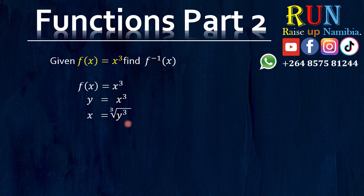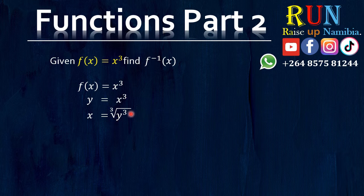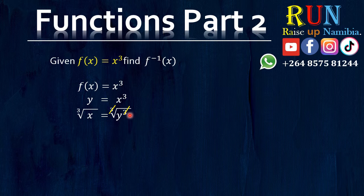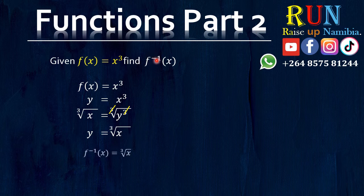So making y the subject of the formula, we will have to cancel out this small 3 on top. How can we cancel that small 3? By finding the cube root of y³ — basically to cancel out that exponent. Remember whatever you do on one side, you need to do on the other side, so we also find the cube root of x. This will cancel out the exponent and you will be left with y is equal to the cube root of x.